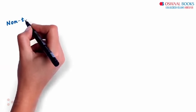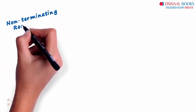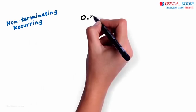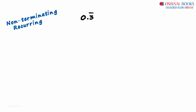How do we convert a non-terminating recurring decimal to the form p by q? Take the number 0.3 with a bar over 3. How do we get this in the form p by q? It is simple but interesting.